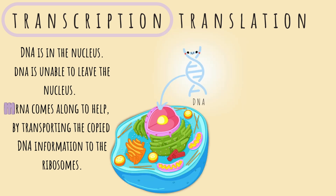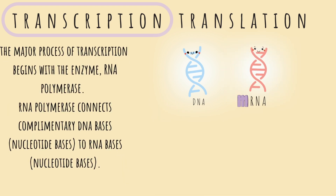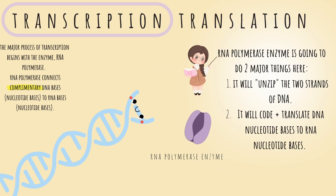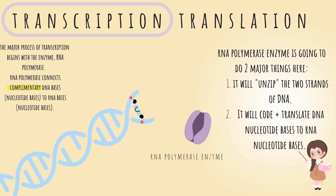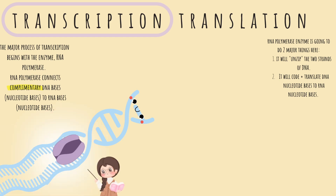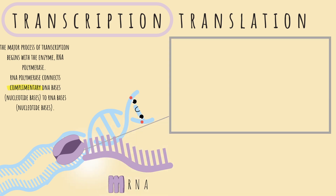Here is our DNA that we find in the nucleus, and here is our mRNA. The major process of transcription begins with the enzyme RNA polymerase. RNA polymerase connects complementary DNA bases to RNA bases. RNA polymerase will do two major things: one, it will unzip the two strands of DNA, and two, it will code and transfer DNA nucleotide bases to the appropriate RNA nucleotide bases. Here we can see the polymerase enzyme unzipping the DNA, and as it unzips, it is also creating the mRNA. The RNA polymerase only uses one strand of DNA to code — that strand is referred to as the template strand, also called the antisense strand.